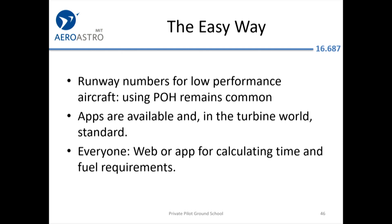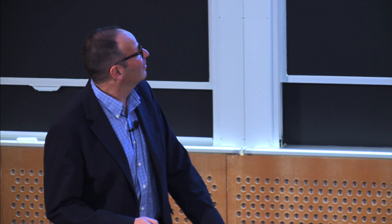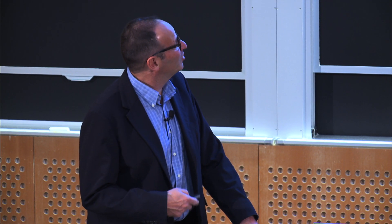Getting runway numbers for low-performance aircraft, it's still pretty common to use the POH. People aren't usually in a situation where they have to worry about it — if you're going from Hanscom to Martha's Vineyard and back, both airports are big enough for a Boeing. Apps are available even for low-performance aircraft and are very useful if you're going into tighter airports.